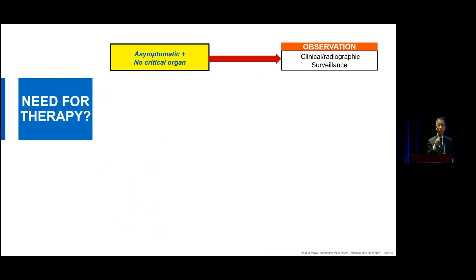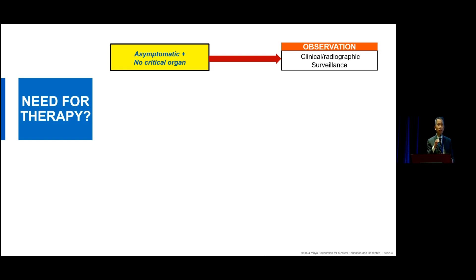Not everybody needs therapy. If the patient is not symptomatic and the involved organ or site is not a critical organ — for example, rashes, bone without any major symptoms, or even just the hairy kidneys without any kidney function abnormality — then one can be observed. Many of our patients who are minimally symptomatic or incidentally found have had the condition for years and have been observed for many years.